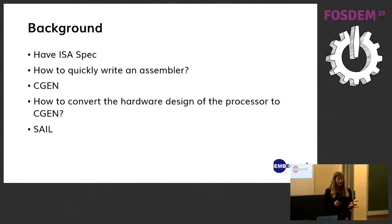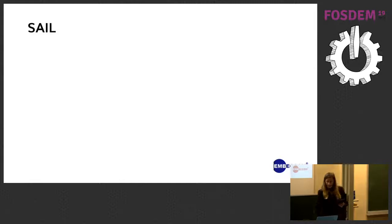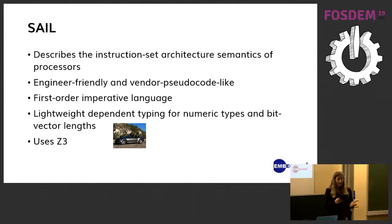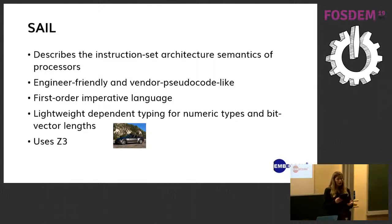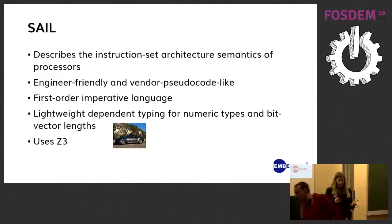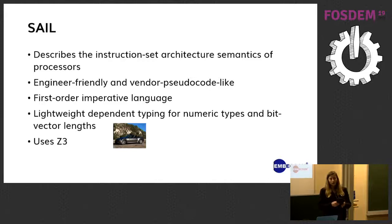SAIL was developed to fulfil this niche. The formal model is written in SAIL, a language describing the instruction set architecture semantics of a processor. It is a work in progress by the University of Cambridge. SAIL aims to provide an engineer-friendly, pseudocode-like language for describing instruction semantics. It is essentially a first-order imperative language, so it uses predicates which can define non-logical objects — for example, there exists X such that X is Socrates and X is a man. SAIL also has lightweight dependent typing for numeric types and bit vector lengths, which are arrayed data structures that compactly store bits. These are automatically checked using Z3, the prover — not the BMW.